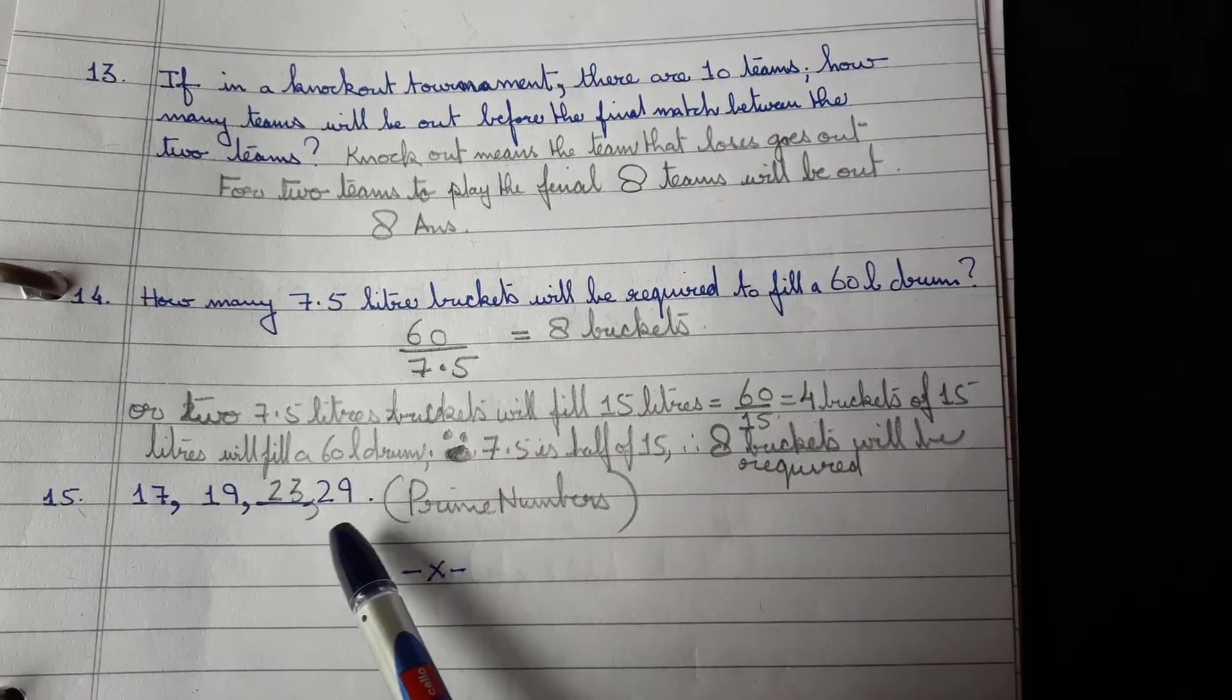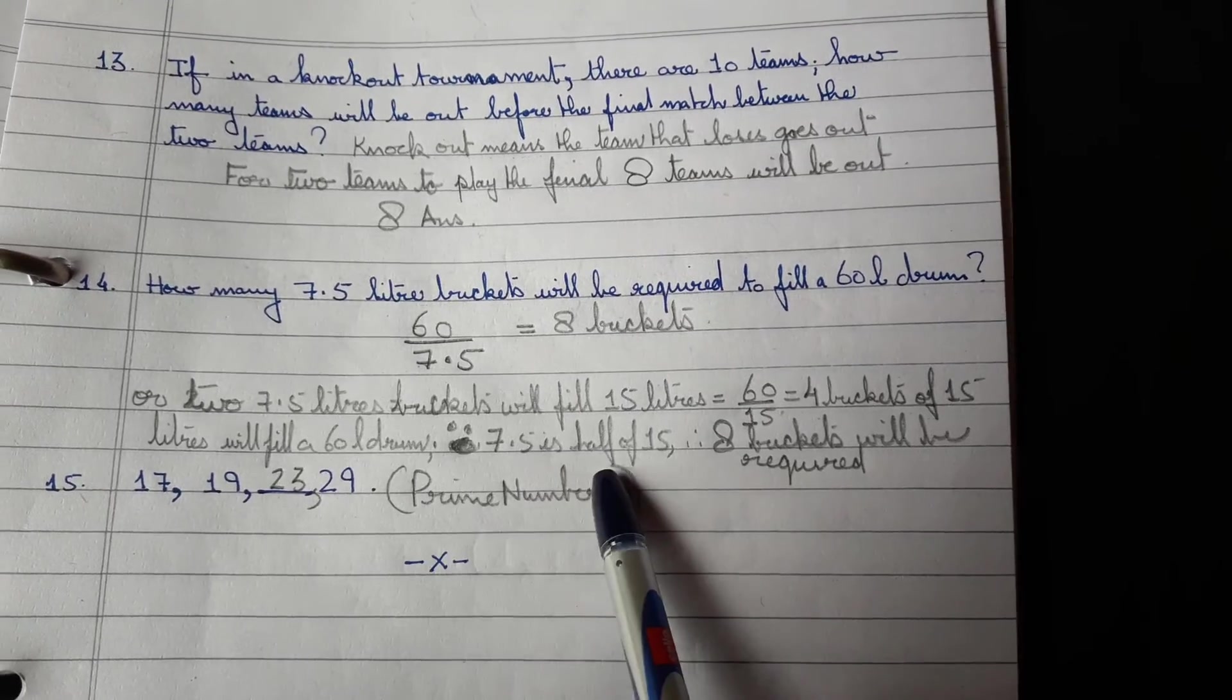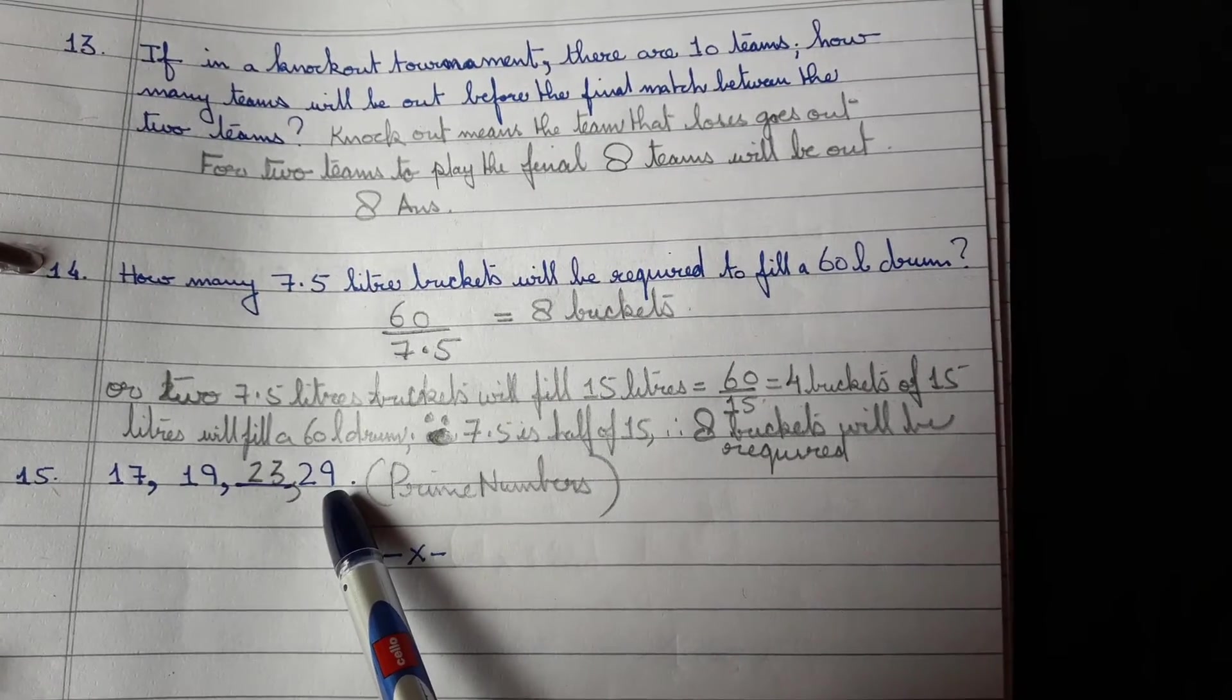17, 19, next prime number 23. All right? So this was the series of prime numbers. None of the numbers is divisible.